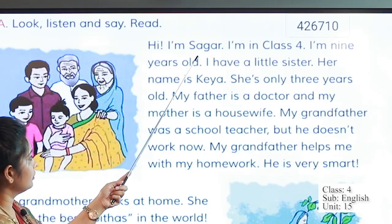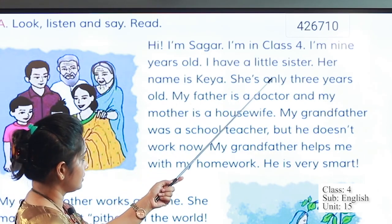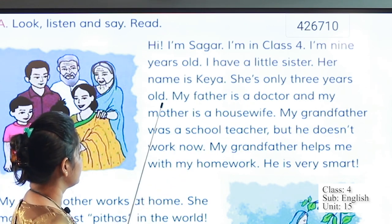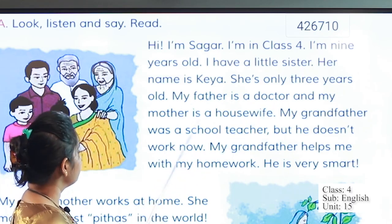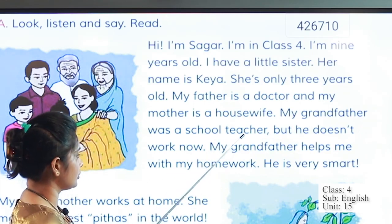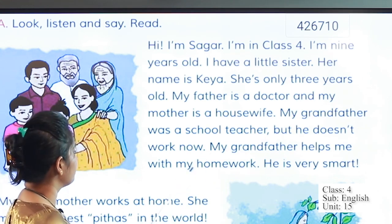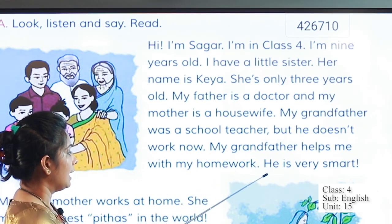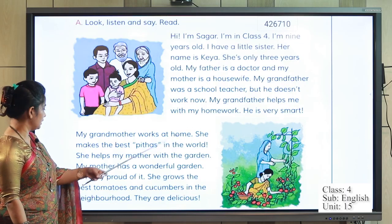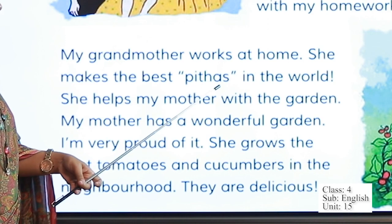Hi, I'm Shagor. I'm in Class 4. I'm 9 years old. I have a little sister. Her name is Kea. She's only 3 years old. My father is a doctor and my mother is a housewife. My grandfather was a schoolteacher, but he doesn't work now. My grandfather helps me with my homework. He is very smart. My grandmother works at home.